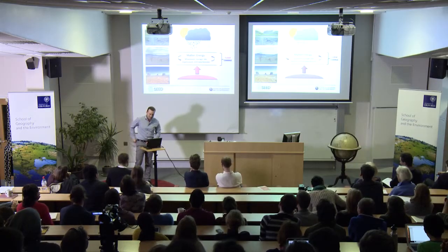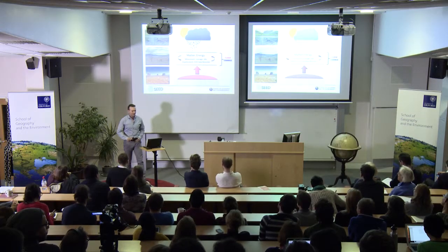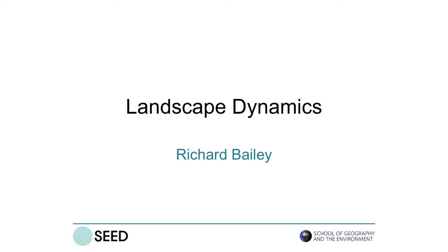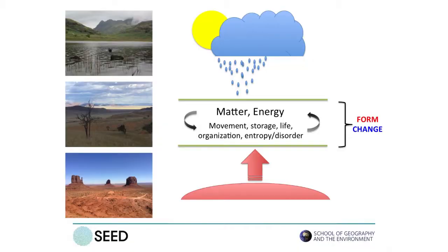Landscapes are really the physical interface between what's above the atmosphere and what's below the solid earth. They're a zone of intense dynamism — they're where things move around, they grow, they die, they interact in lots and lots of ways, and over lots and lots of different timescales.